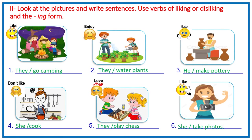Exercise 2: look at the pictures and write sentences using verbs of liking or disliking and the -ing form. For example, look at picture one: they like going camping. The answer is: they like going camping. Now it's your turn — let's do it yourself.